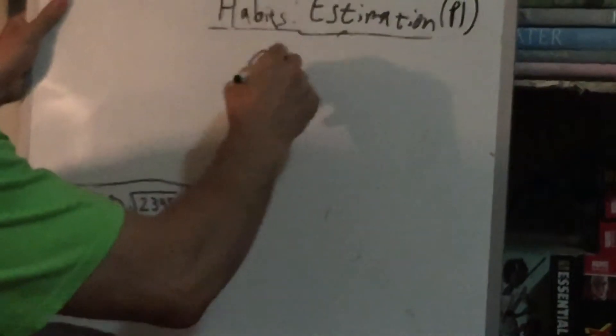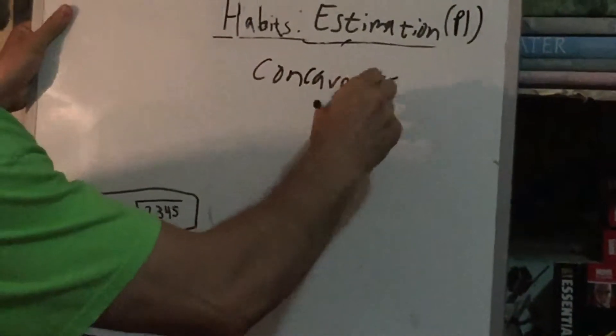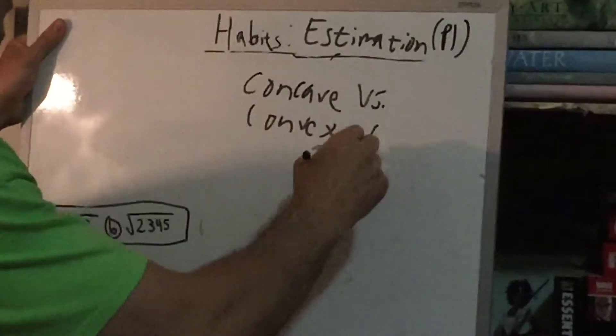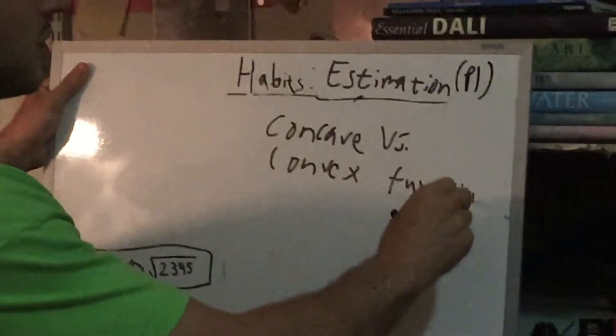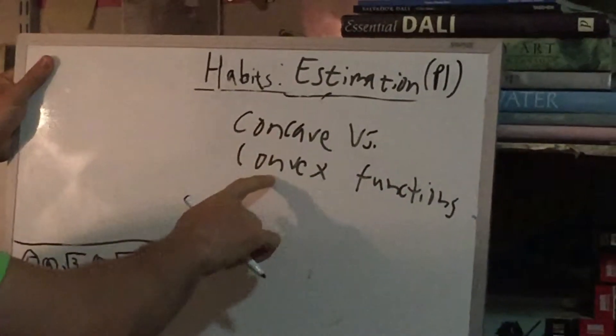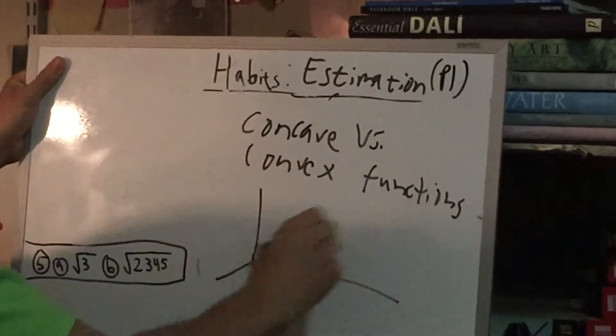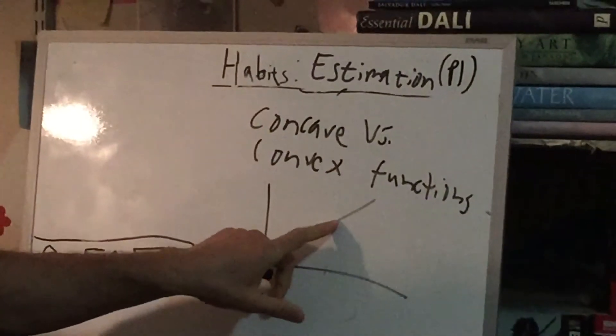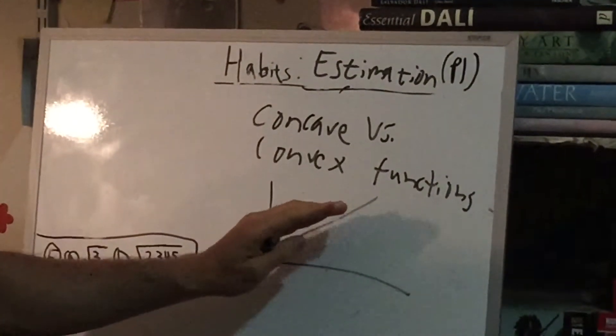And this has to do with concave versus convex functions. Don't worry about the term functions for now, just look at the words concave and convex. Now, a straight line is known as a linear function. It's a line, linear line.